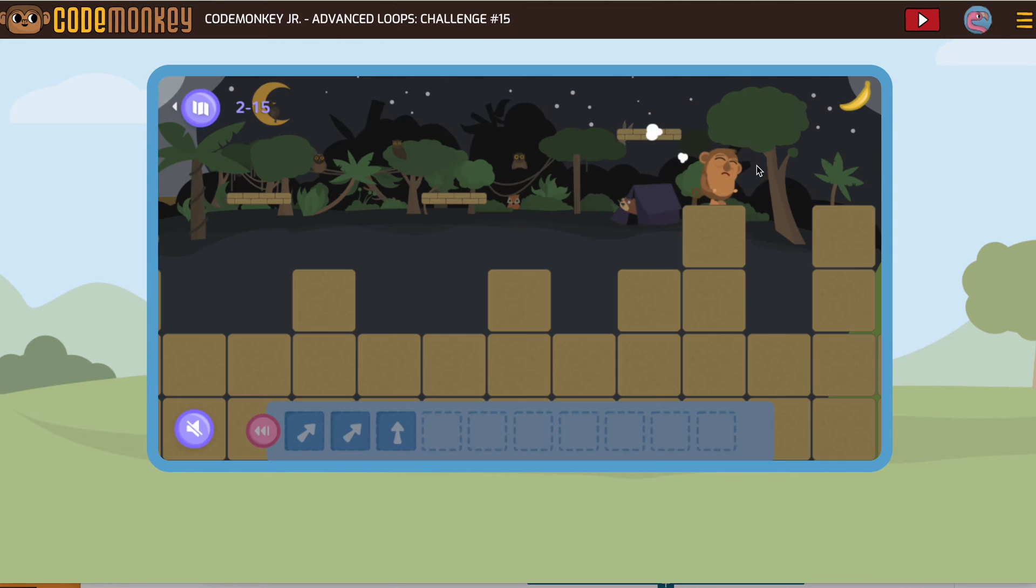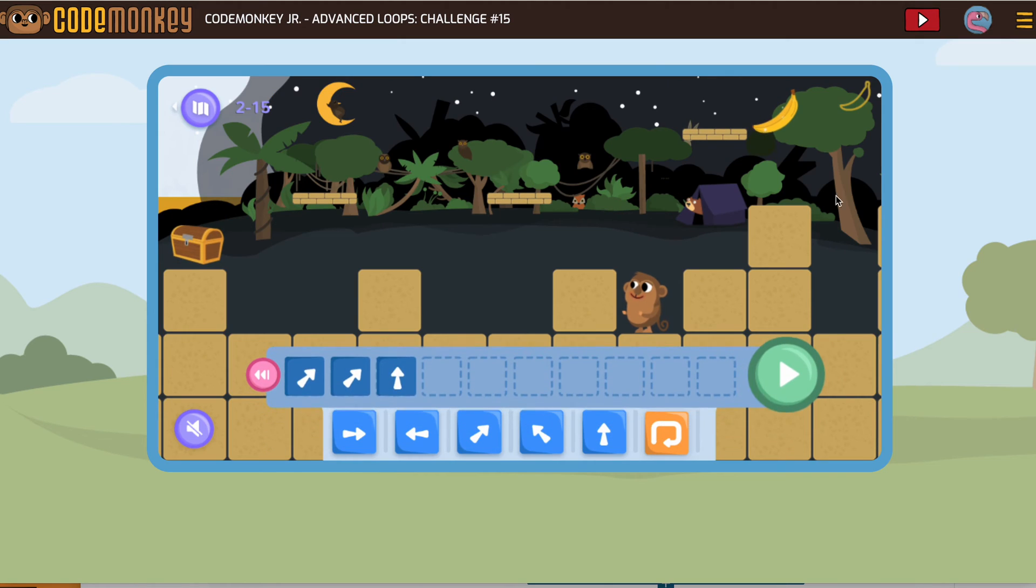So let's take a look. So now let's look: if we go forward one, two, and then jump up, and then forward one, two, and then jump up. See that? Forward one, two, and then jump up.